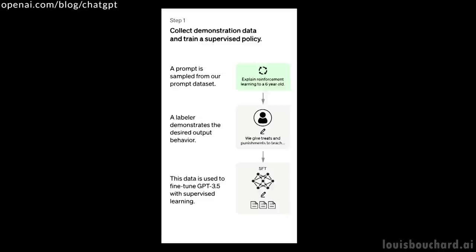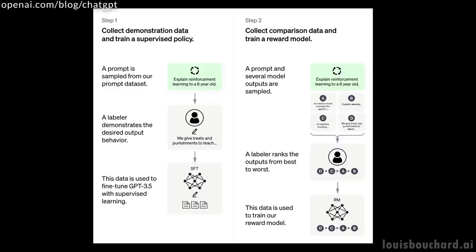The second step is to add reinforcement learning, which will allow the model to practice and get better. As you know, practice makes perfect. In this step, we will use the model to chat with humans directly, have it provide multiple possible answers, and ask the human to rate the answers from best to worst.